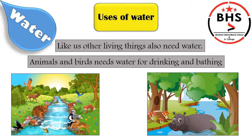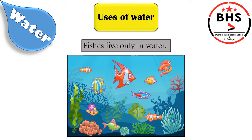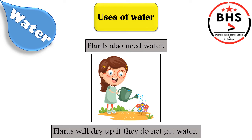Children, as you can see in the pictures, like us, animals and birds also need water for drinking and bathing. Like us, plants also need water. Without water, the fishes will die, so they need water to live. Plants also need water — they will dry up if they do not get water. If they do not get water to drink, then the plants will dry up and die.